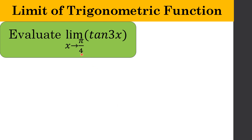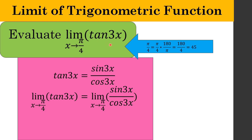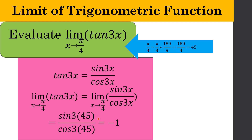Evaluate the limit of tan 3x as x approaches pi over 4. Convert pi over 4 by multiplying by 180 over pi, giving 45 degrees. Note that tangent 3x is the same as sin 3x over cos 3x. You can use either sin 3x over cos 3x or use the tangent function directly on your calculator. The function evaluates to negative 1, so the limit of tan 3x as x approaches pi over 4 is negative 1.